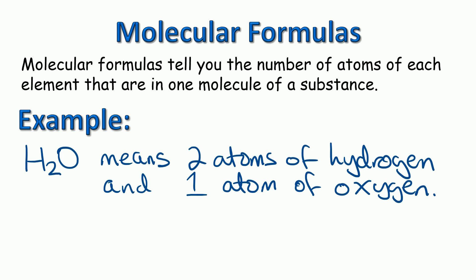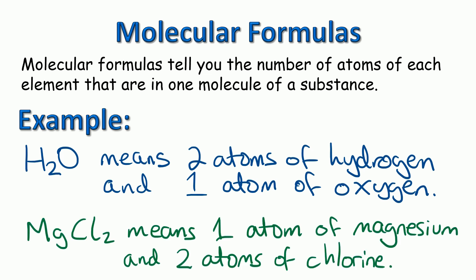The second example is MgCl2. This means there's one atom of magnesium, because there's no number after it, and two atoms of chlorine, as we can see from the little two after chlorine. Notice how we can tell there's actually two elements in this, even though there's four letters, because each capital letter is the start of a new name. So Mg is all one element, magnesium, and Cl is all one element, which is chlorine.